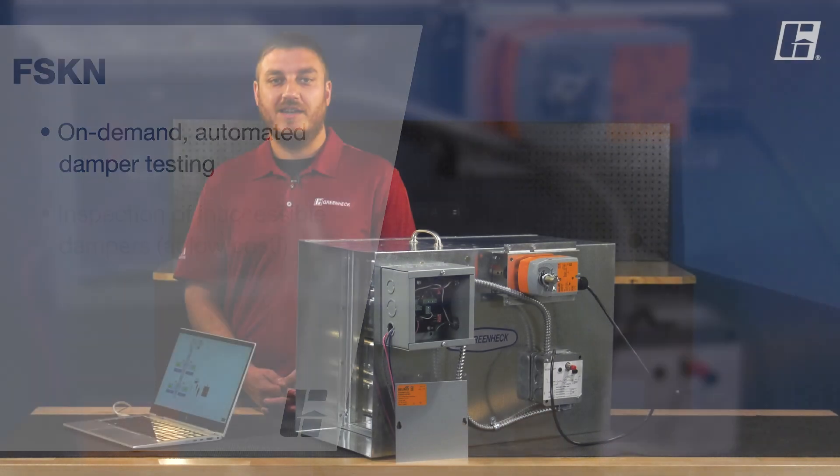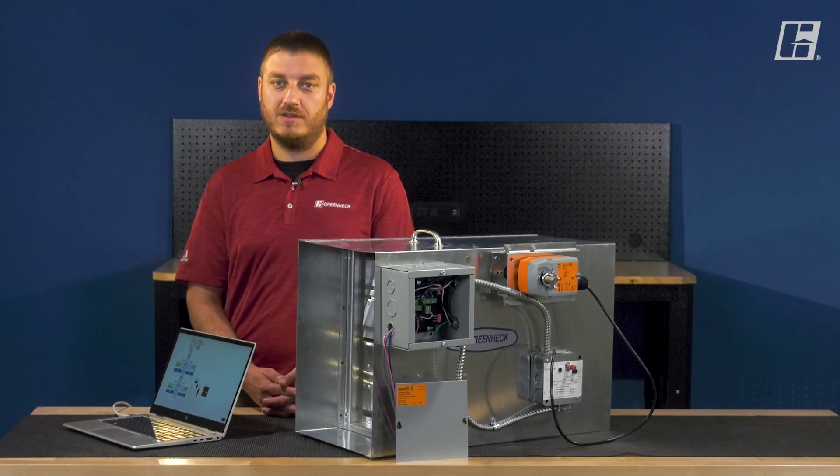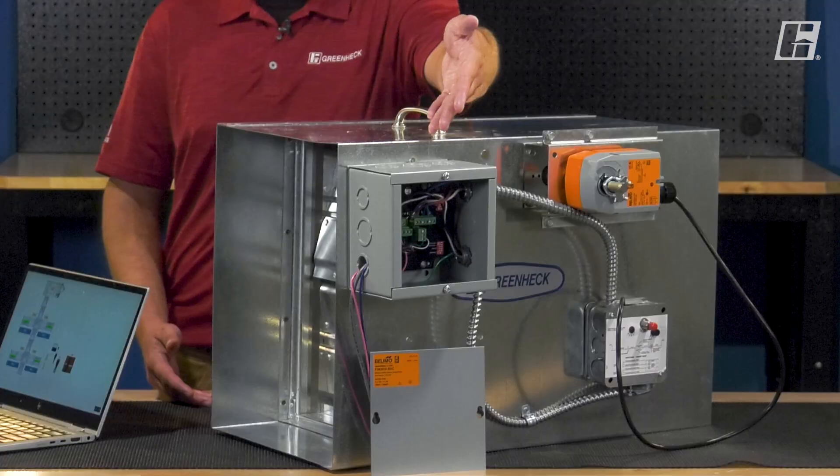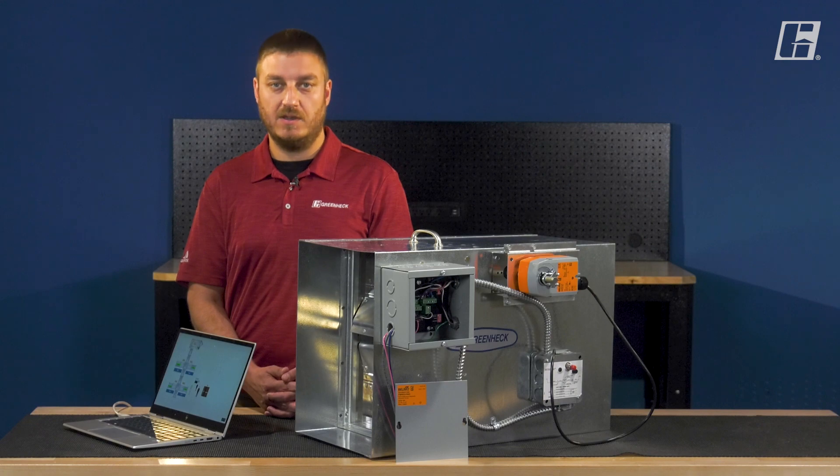Installation is simple. The FSKN is a remote testing module so it can be installed in a convenient location including mounted directly to the damper sleeve. It is available in 24 volt and 120 volt options which also can be used for 208 volt supplies.